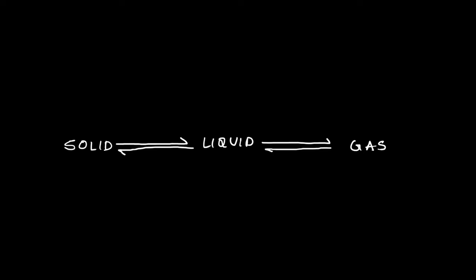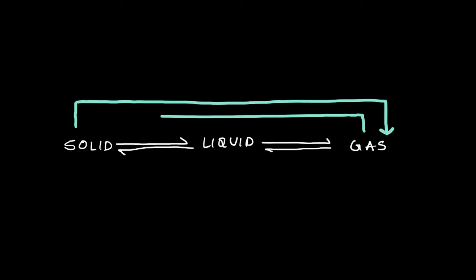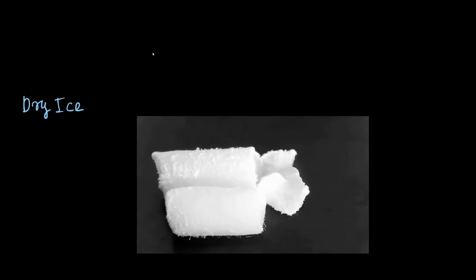Where a solid directly turns into a gas without passing through the liquid stage, and it can go the other way around too, where a gas becomes solid skipping the liquid phase. Let us look at an example. Dry ice is just solid carbon dioxide and it is extremely cold with a freezing point of minus 78.5 degrees Celsius.